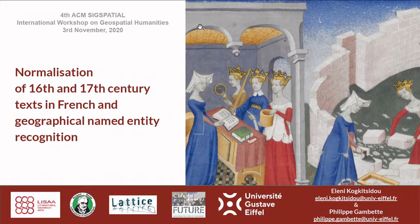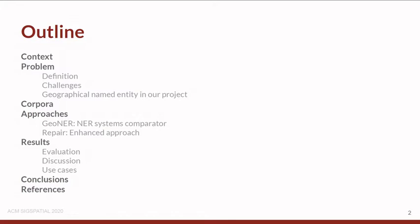Hello everybody, I'm Eleniko Gizetou and I will present our work dealing with normalization of 16th and 17th century texts in French and geographical name entity recognition. In this presentation we will see a brief context of our project, the definition of our work problem, the challenges to overcome, what kind of geographical name entities we are seeking, our corpora, our approaches, our contribution with an enhanced approach, evaluation results, discussion, use cases, and finally our conclusion.